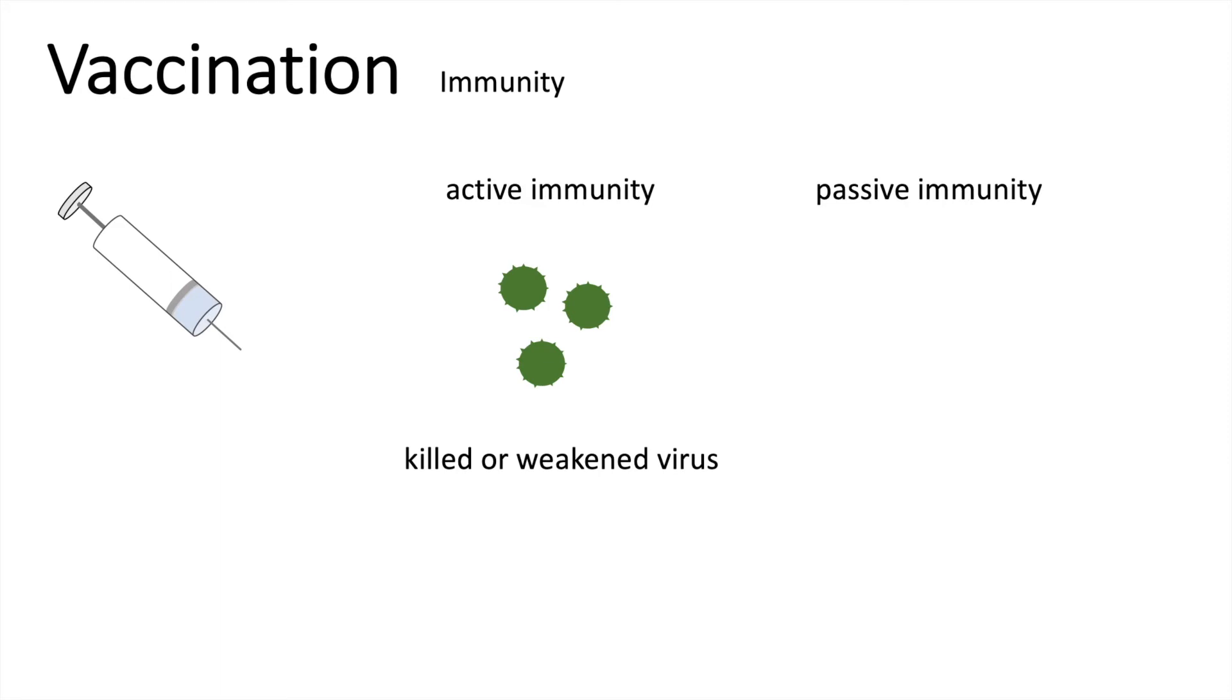In terms of active immunity we inject either a killed or a weakened form of the pathogen. When we speak about passive immunity, antibodies are directly injected. These work immediately.